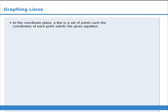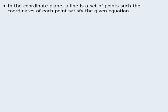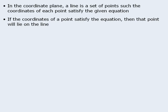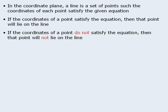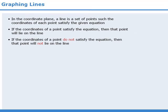Let's summarize. In this lesson, we learned that when graphing lines in the coordinate plane, a line is a set of points such that the coordinates of each point satisfy the given equation. If the coordinates of a point satisfy the equation, then that point will lie on the line. And if the coordinates of a point do not satisfy the equation, then that point does not lie on the line.